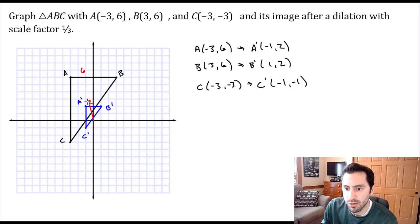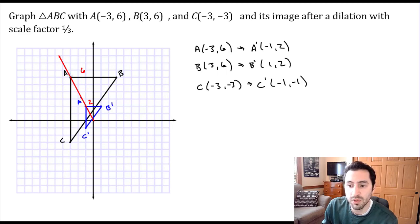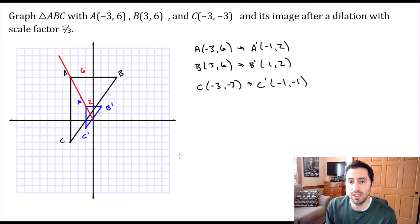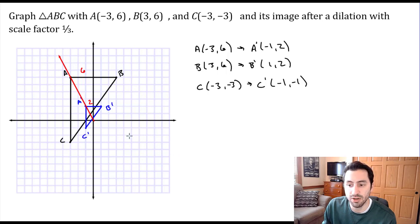That distance is being shrunk down to a third of what we started with. So that's the basics for dilation — it's not a congruence transformation, but it is a similarity transformation. The triangle we started with and the triangle we ended up with have the same relative shape, but one is just smaller, so they are similar.